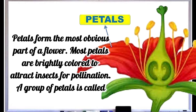Petals form the most obvious part of a flower. Most petals are brightly colored to attract insects for pollination. A group of petals is called the corolla.